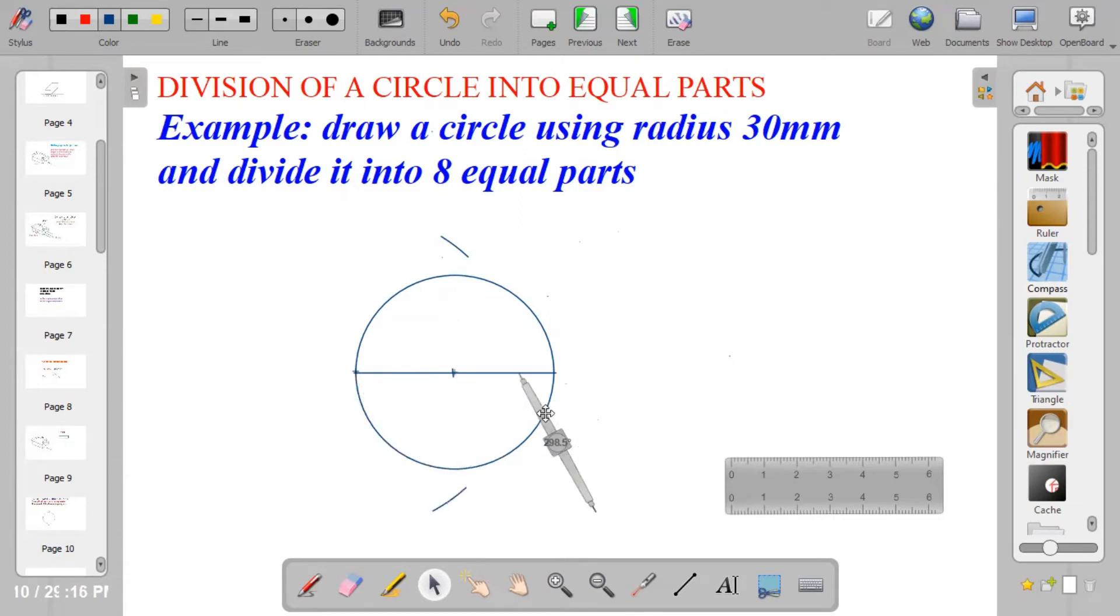Change the compass to the second point. Strike an arc above to cut the first arc above, and take it below.